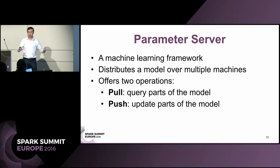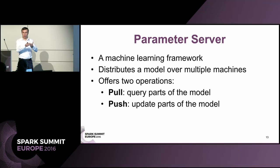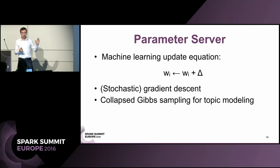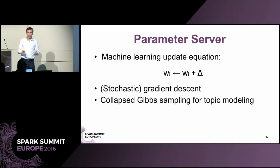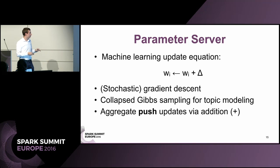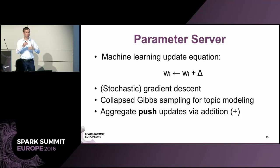Then we have a push operation, which updates parts of the model. This is a write operation and more complicated because many Spark workers may write to the same location, requiring locking schemes. However, in the parameter server we exploit the fact that update equations typically take the form: parameter W_i updated by adding some delta — which could be the gradient in SGD, or plus/minus one in collapse Gibbs sampling. We aggregate push updates via addition only. Addition is commutative and associative, so the order of updates doesn't matter and we completely avoid locking.